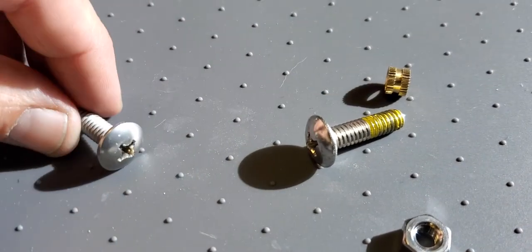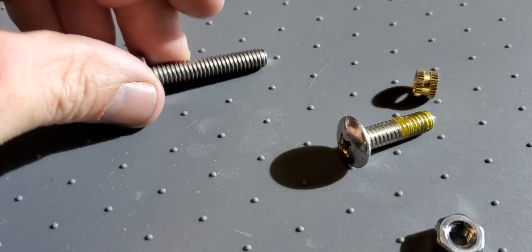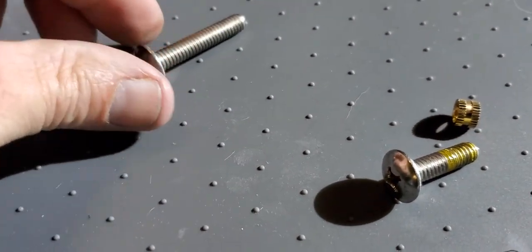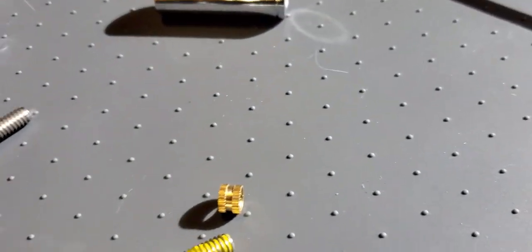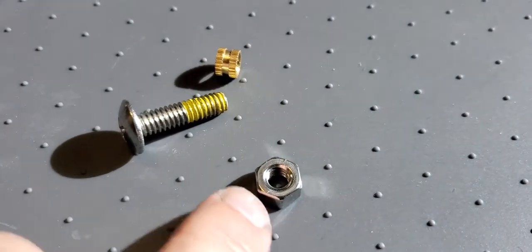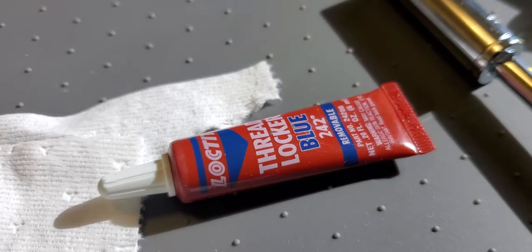Go to Lowe's, Home Depot, whatever, and get another stainless steel one, an inch and a quarter long. That's a one. This is an inch and a quarter. They're cheap, and get a quarter-twenty nut to go with it. Not a nylock, just a regular nut, and a little bit of thread locker.